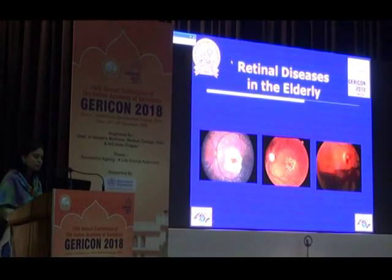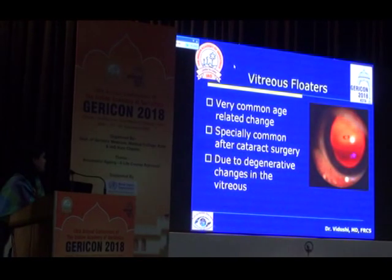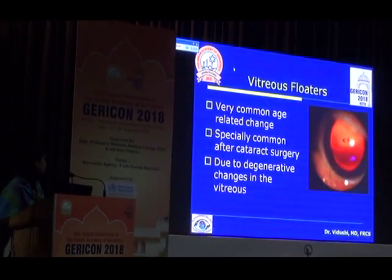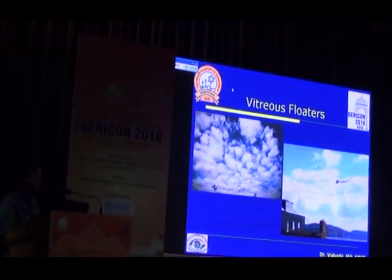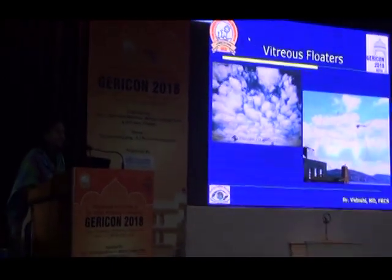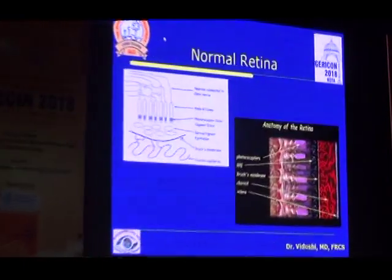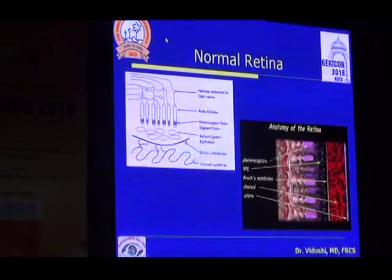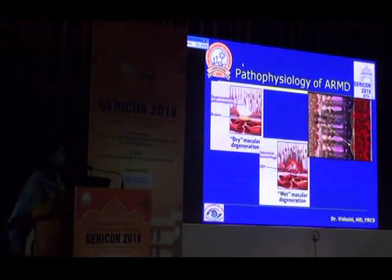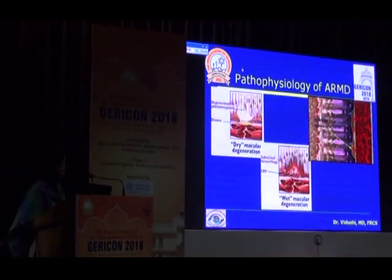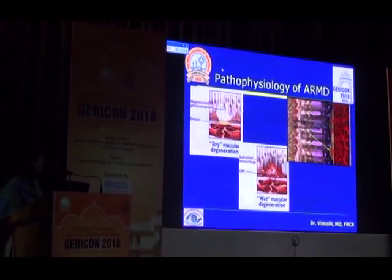Next, we come to retinal diseases in the elderly. The common problems are floaters, diabetic retinopathy, and age-related macular degeneration. Floaters have nothing to do with blindness but because they are so common, it is good to know that many patients experience them — things that appear to be floating in their vision. They are very disturbing and annoying but in the majority of patients they are harmless. All you need is a good retinal examination to ensure there is no other problem in the retina. This is the normal retina with its photoreceptors and RPE layer.